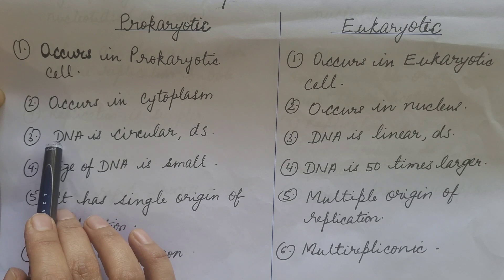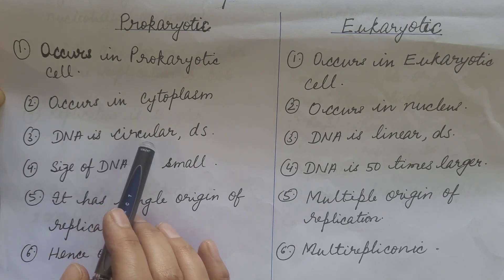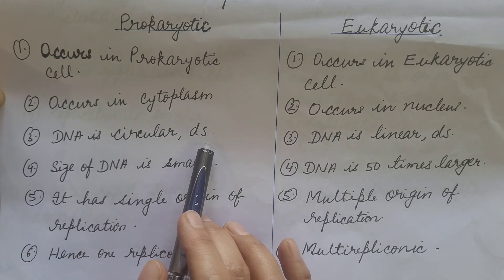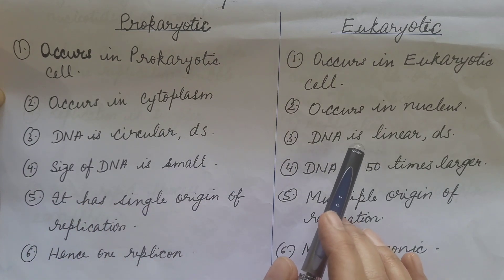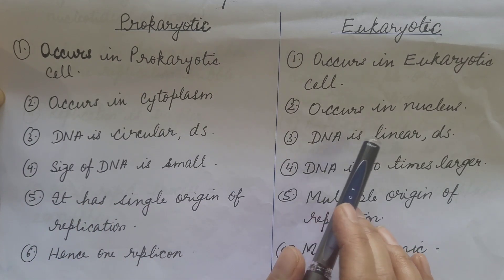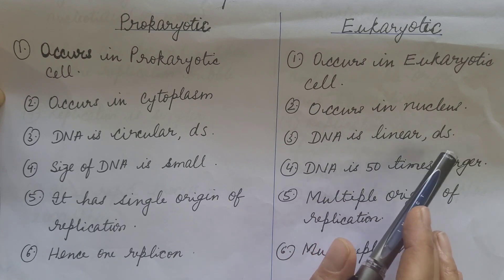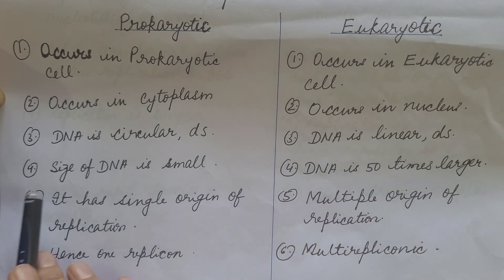In prokaryotes, DNA is circular and double-stranded. In eukaryotes, it is linear and double-stranded.